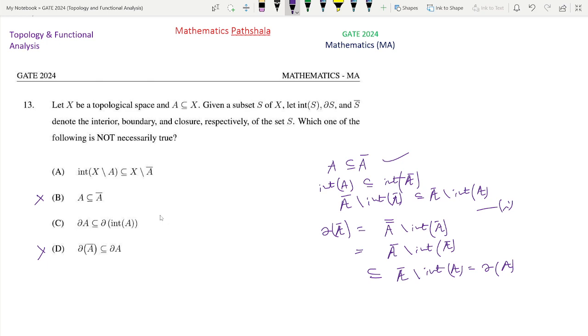And also look at option A. We know that int X minus A, interior of X minus A is X minus A bar. This is the definition. This is the theorem, standard theorem. So we must have this int X minus A will be subset of X minus A bar. So this is also true. So this is not the correct option.